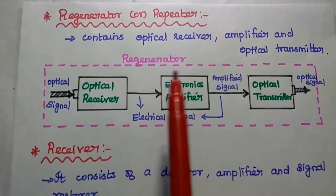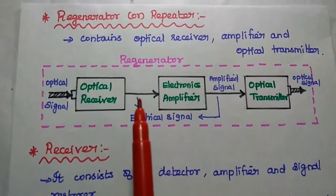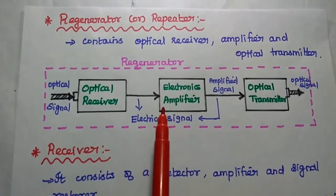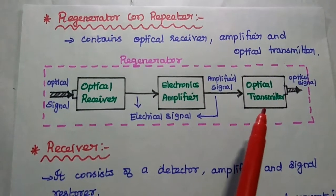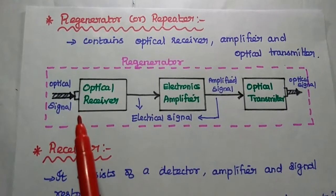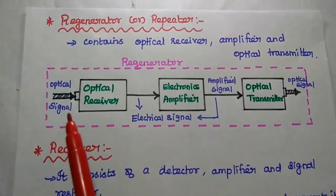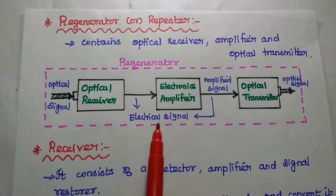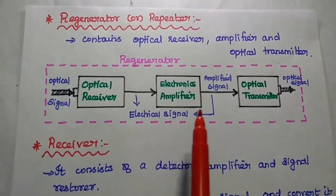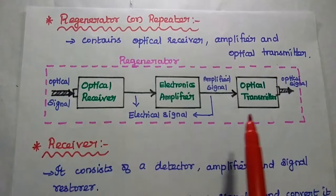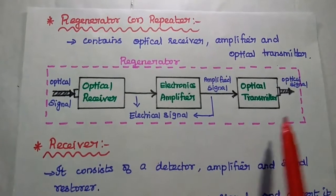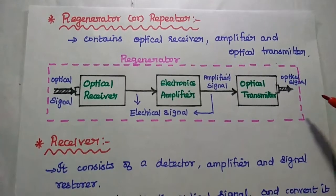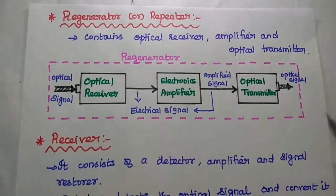The regenerator or repeater is mainly used to compensate the attenuation loss at a particular distance. It contains the optical receiver, electronic amplifier, and optical transmitter. The optical receiver receives the optical signal with attenuation loss and converts it into an electrical signal. This electrical signal is amplified using an amplifier, then converted back to the optical signal and transmitted through the fiber cable for the next particular distance.